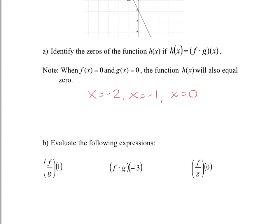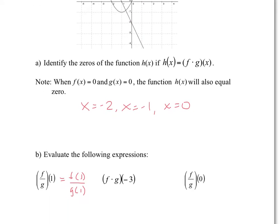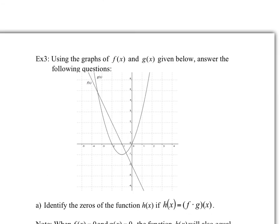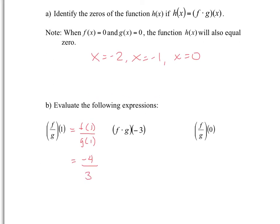All right, evaluate the following expressions. So this is f divided by g of one. So another way to write this would be f of one divided by g of one. Okay, so for f of one, go back to our graph, our function f is this one. At x equals one, our value of our function is negative four. So f would be, f of one would be negative four. Now g of one, g of one, again the parabola, at x equals one, we have three. So f of g of one would be equal to negative four thirds.